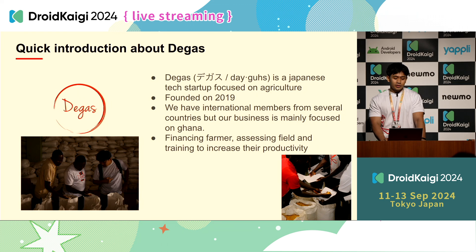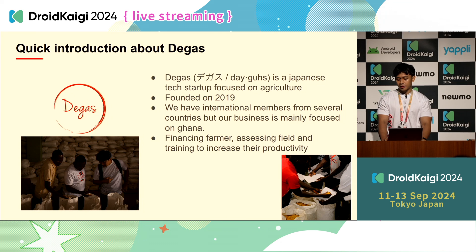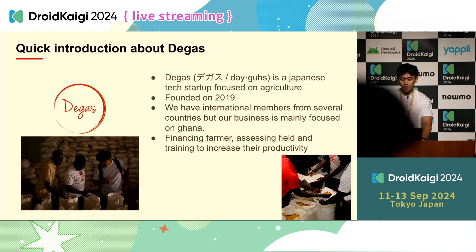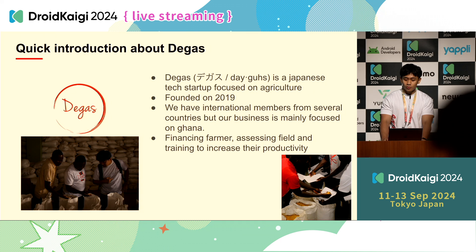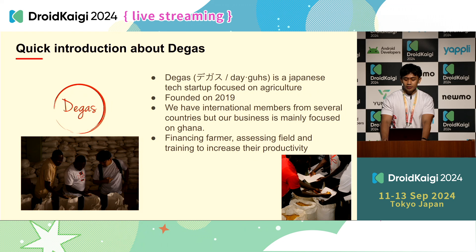Quick introduction about Degas. Degas is a Japanese tech startup focused on agriculture in Ghana. Our business is mainly focused on Ghana. What we are doing is we are financing farmers, assessing their fields, and also providing them with training to increase their productivity and income.